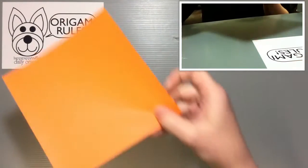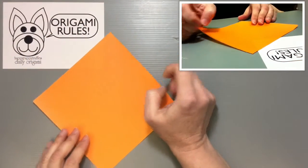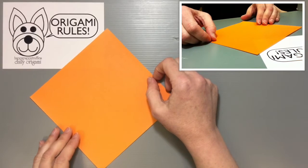For this origami, you just need one piece of origami paper. I'm using a traditional size of 15 by 15 centimeters.